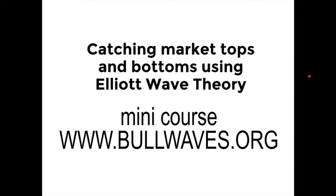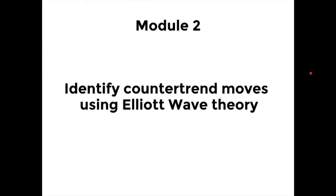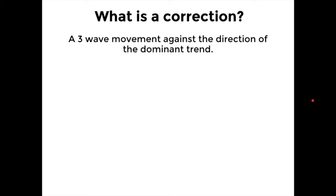Welcome to the second module in our mini course: Catching Market Tops and Bottoms Using Elliott Wave Theory. This module is called 'Identifying Counter Trend Moves Using Elliott Wave Theory.' Counter trend moves are called corrections. The basic definition of a correction in Elliott Wave terms is a three-wave movement against the direction of the dominant trend.